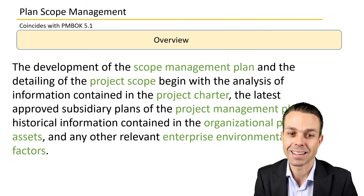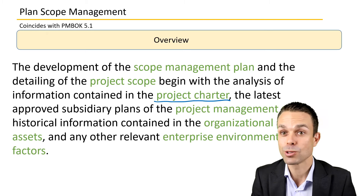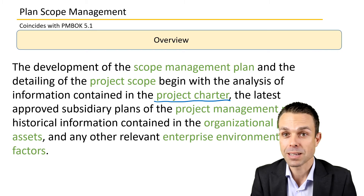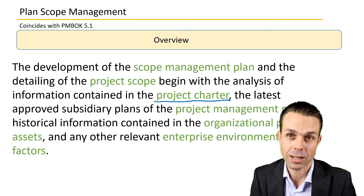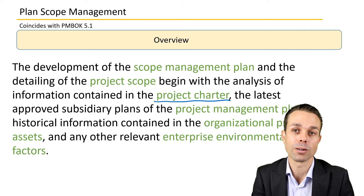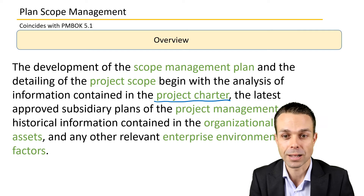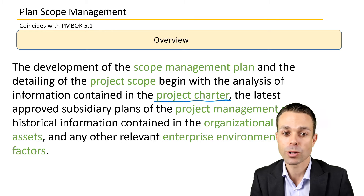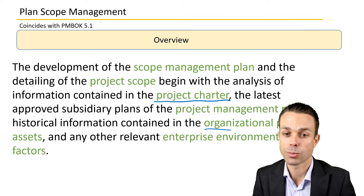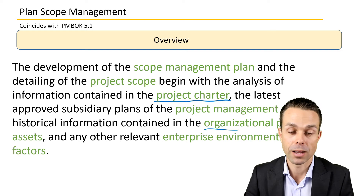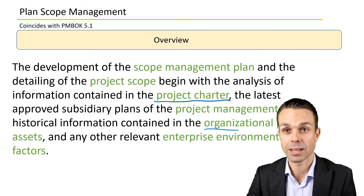The development of the scope management plan and detailing the project scope begin with the analysis of information contained in the project charter — that's our initial document used to initiate or kick off a project. It will have a high-level idea of what we wanted to deliver, but it won't be well defined yet. We also reference the latest approved subsidiary plans, historical information in organizational process assets, and enterprise environmental factors like regulations or standards.